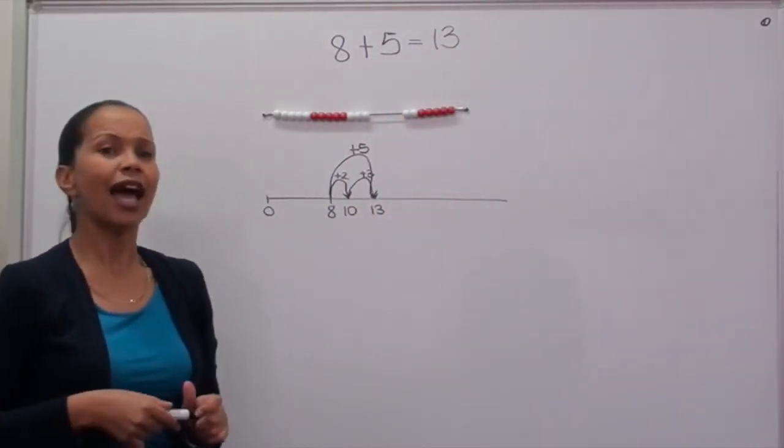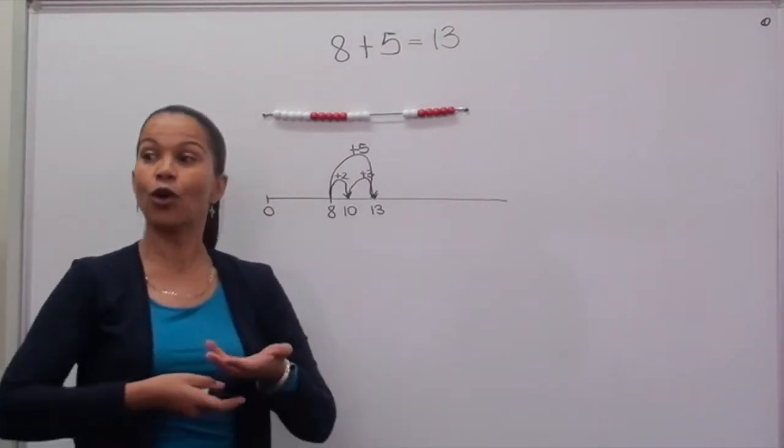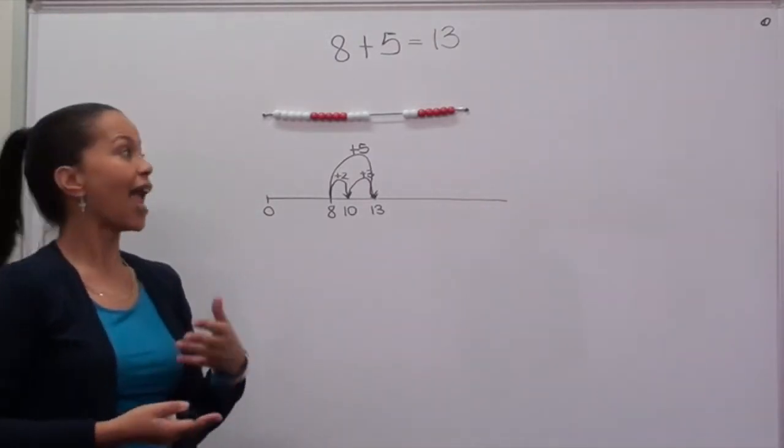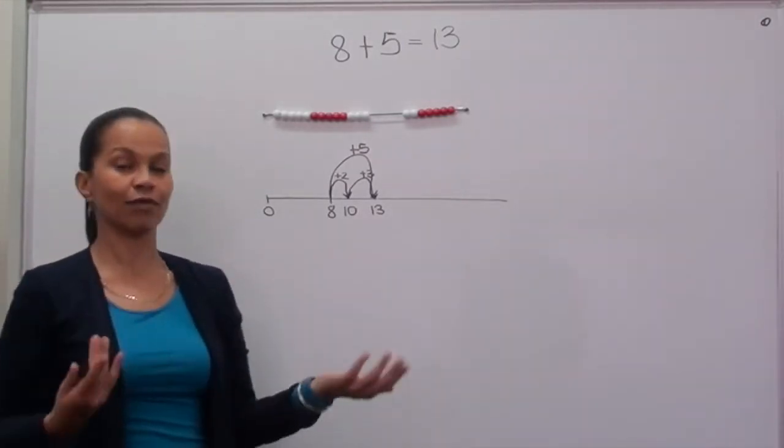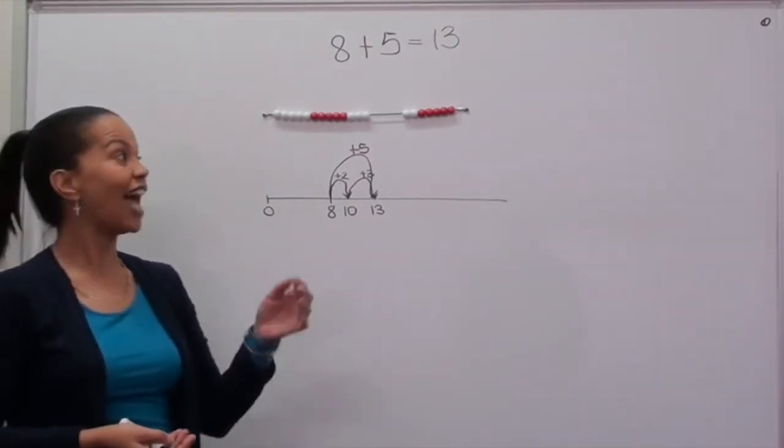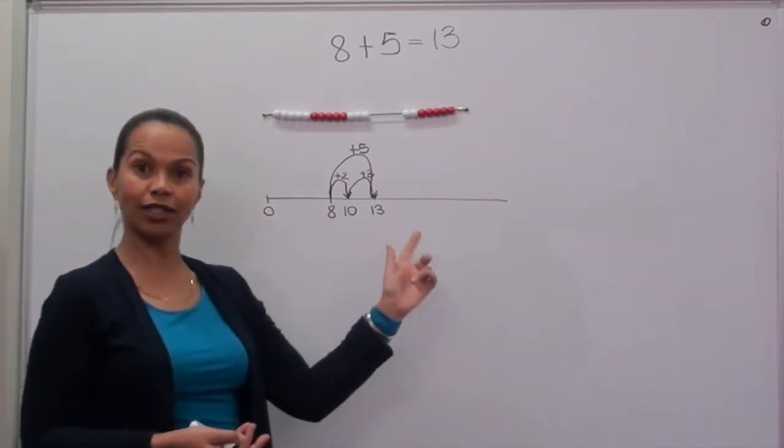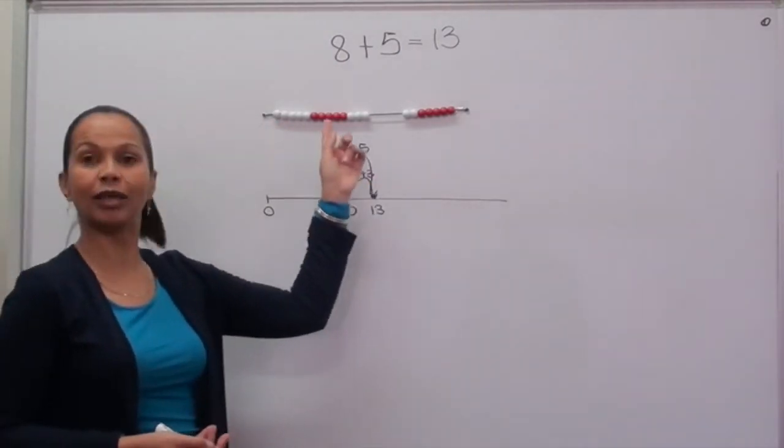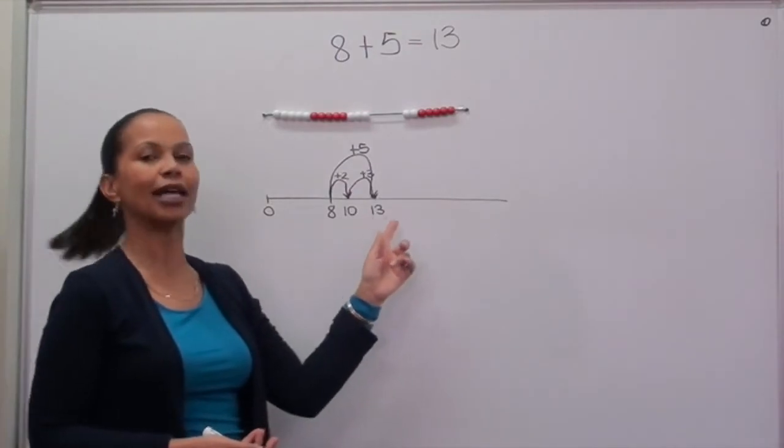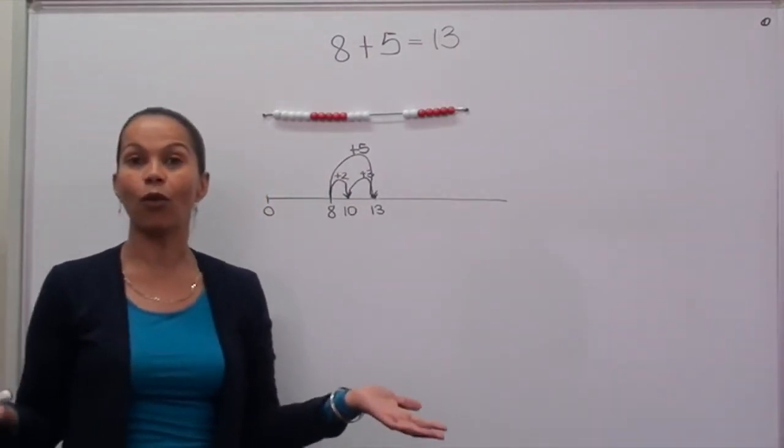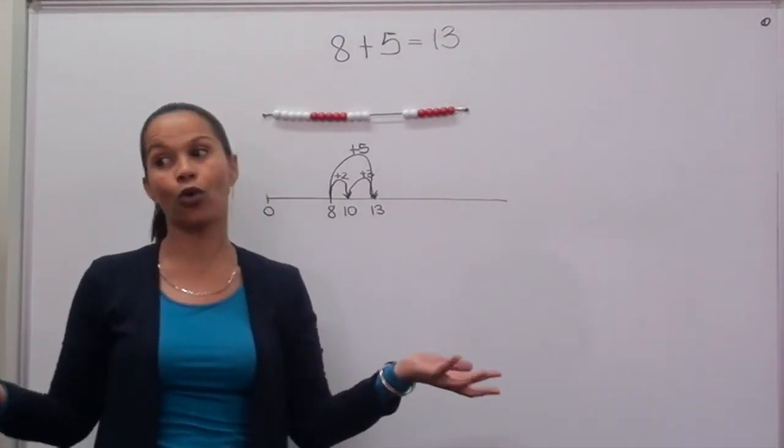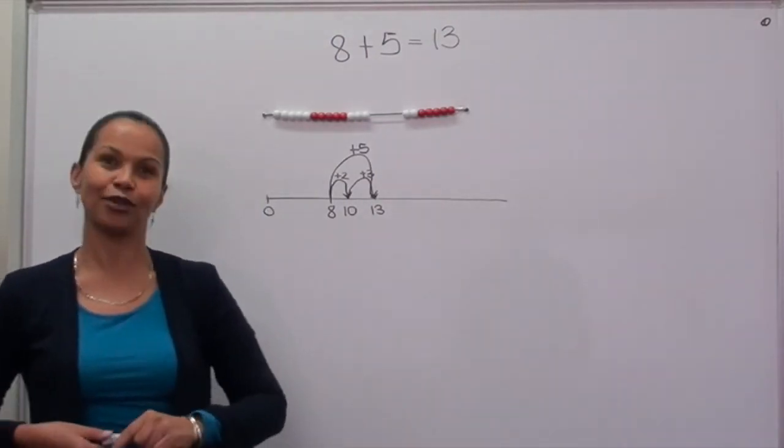Teachers, I will do 2 or 3 similar examples with the class and as they become more used to the strategy that I'm using, I would have them model what I'm doing with the bead string on their own number line. After that, I could give them 2 or 3 more individual tasks that they could do on their own or with a partner. Thank you.